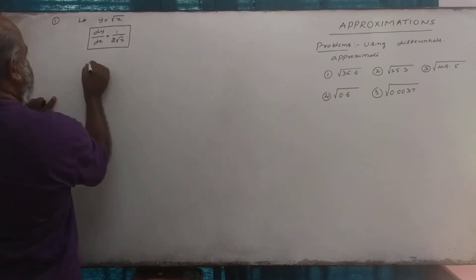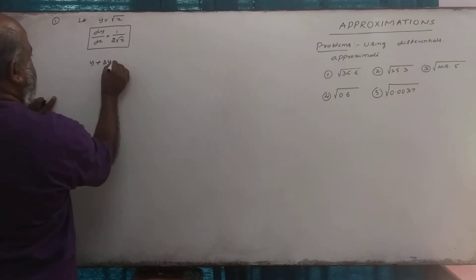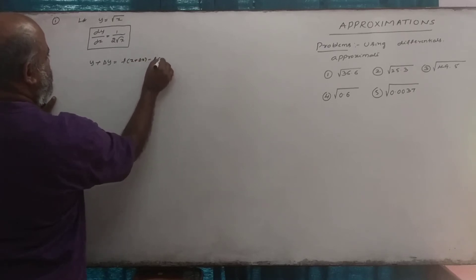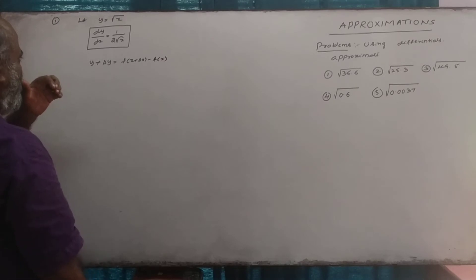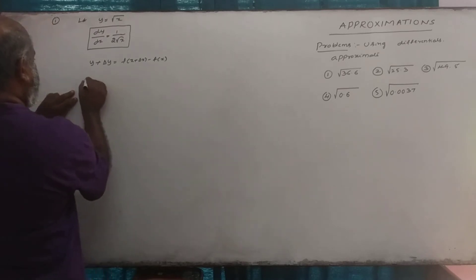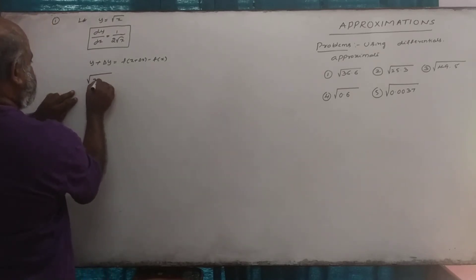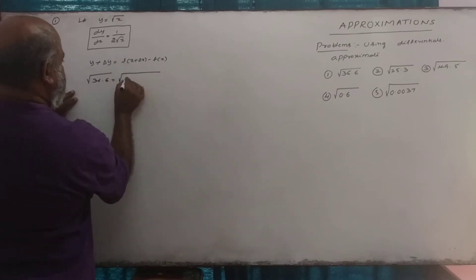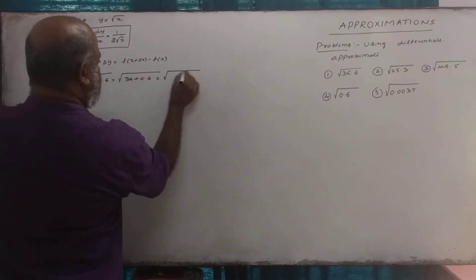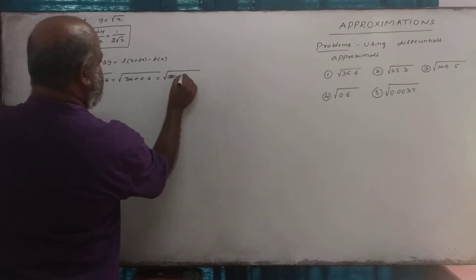We define y plus delta y as f of x plus delta x minus f of x. In this problem, we want to find root of 36.6, which we write as root of 36 plus 0.6, i.e., root of x plus delta x.